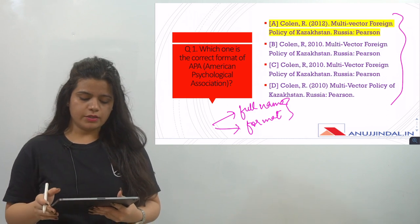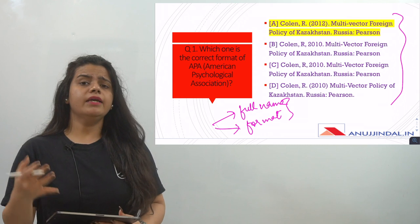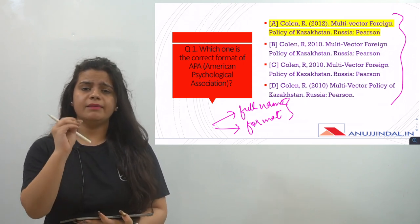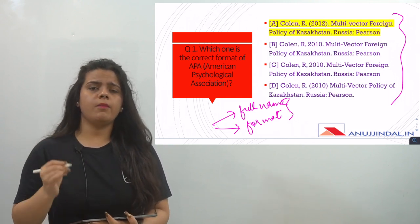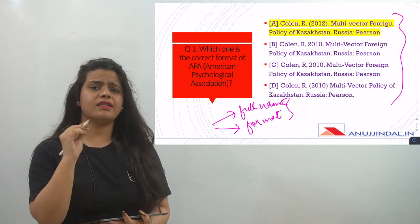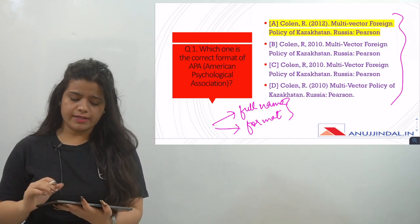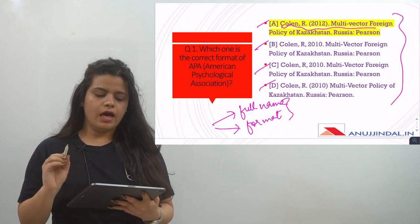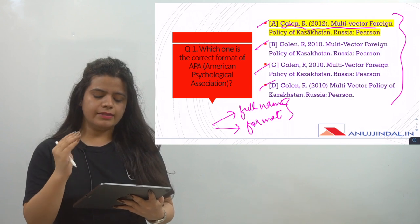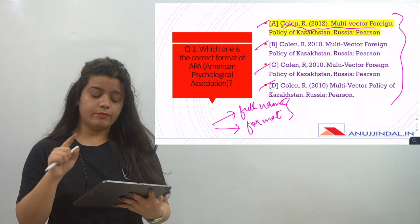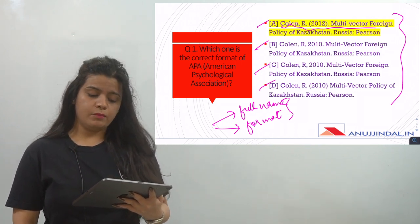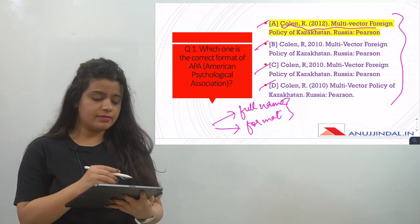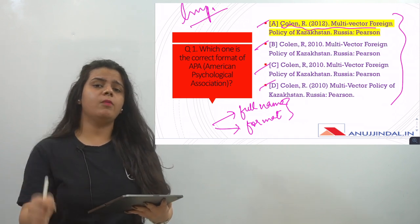In this question, you are asked which format is the correct APA format. To identify it, remember the minor punctuation details: where dots, colons, full stops, commas, and brackets are used. In APA format: surname comes first, then a comma, then the first initial with a dot, then the year in brackets followed by a dot, then the title, then a dot, then the place, then a colon, then the publisher. This is an important question that has appeared twice in UGC exams.